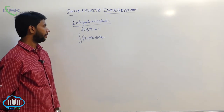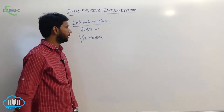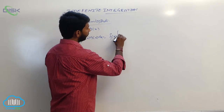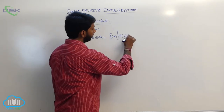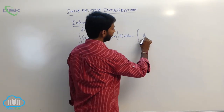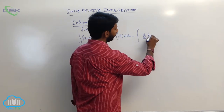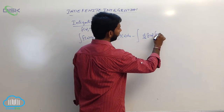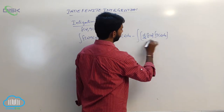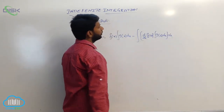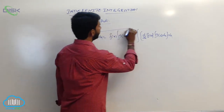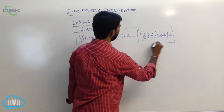...is equal to f(x) into the integral of g(x) dx, minus the integral of d/dx of f(x) into the integral of g(x) dx, whole dx. This is the formula for integration by parts.